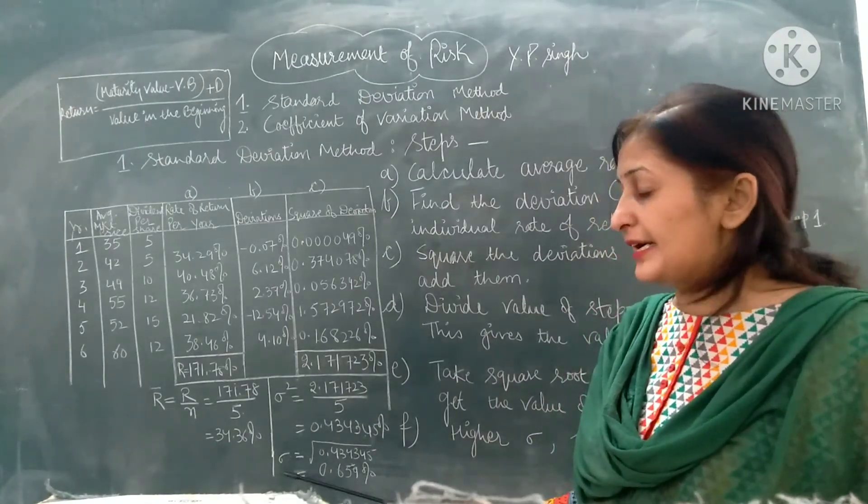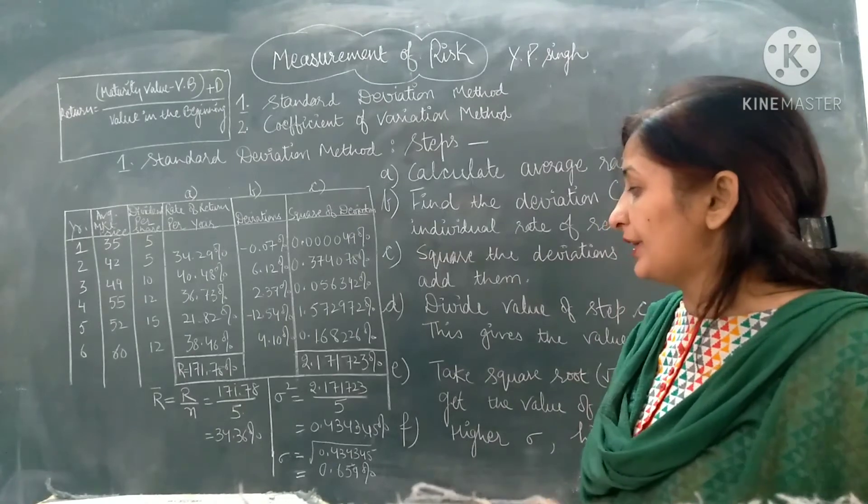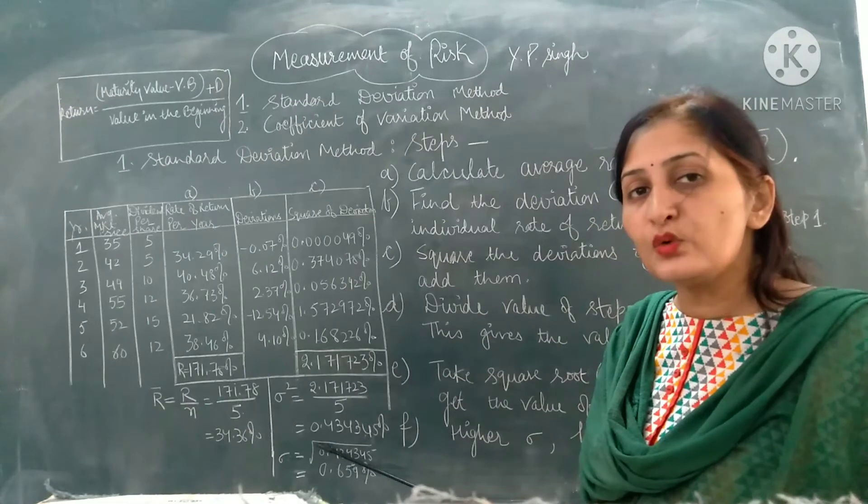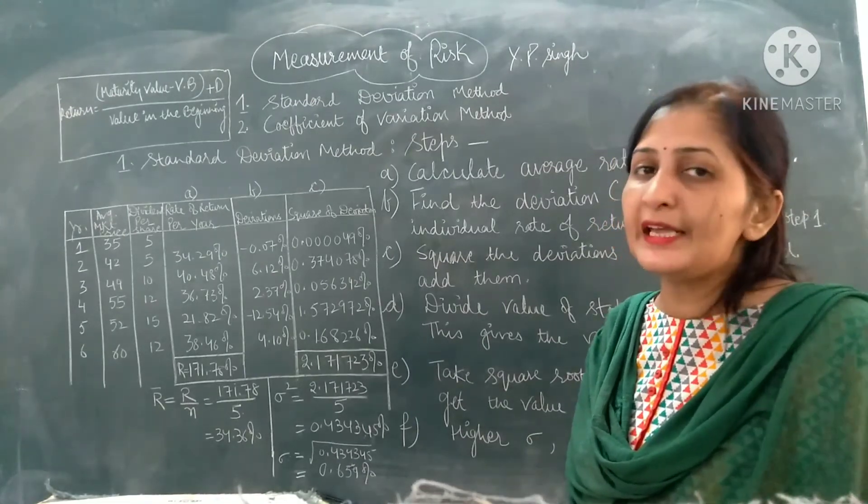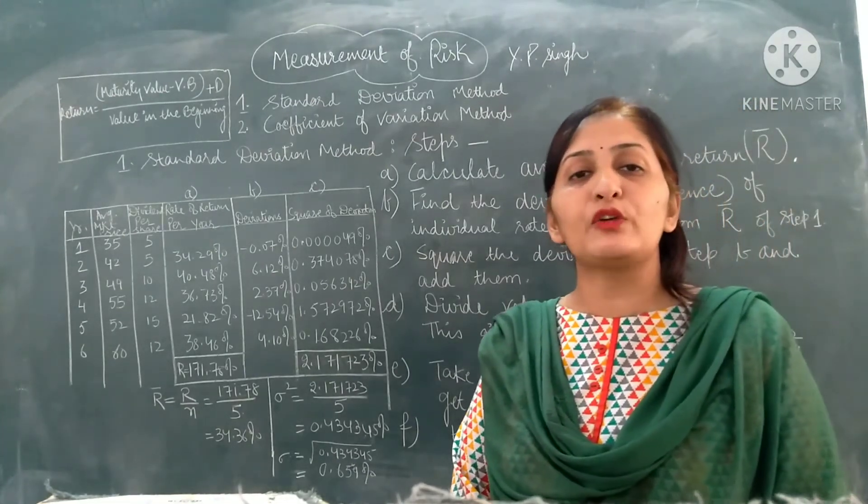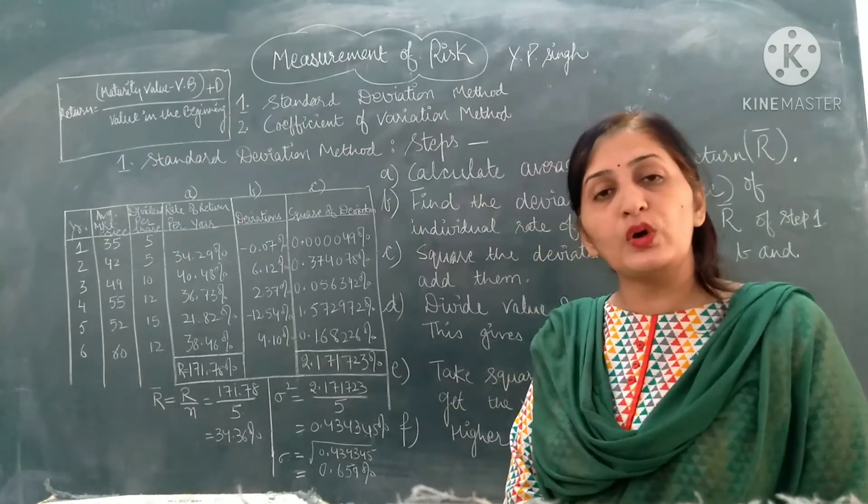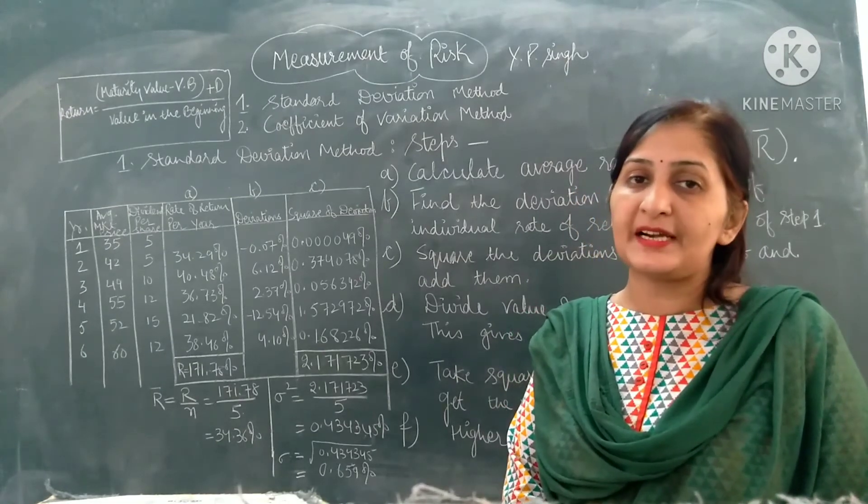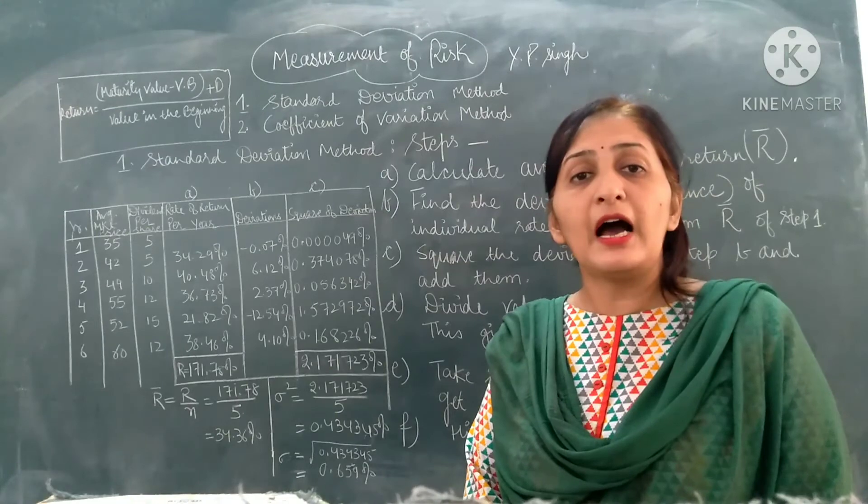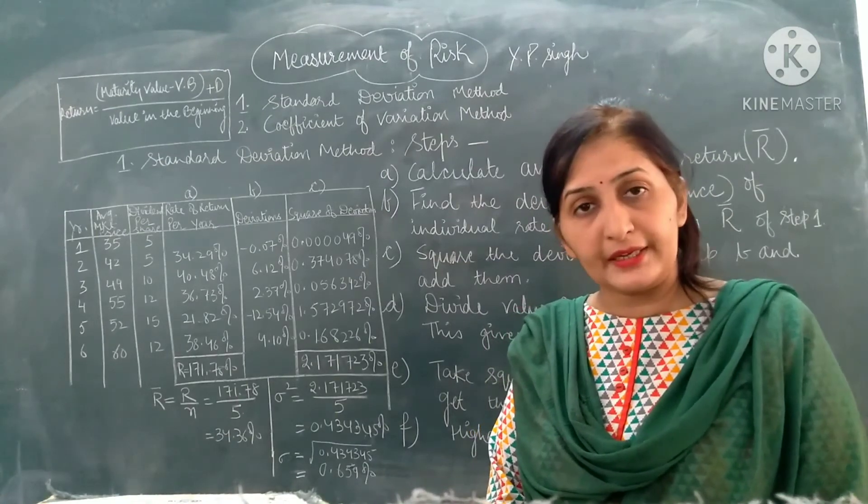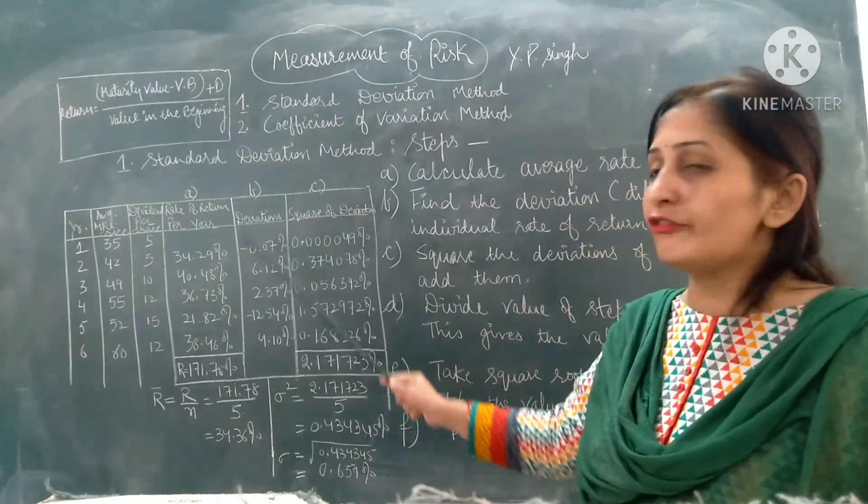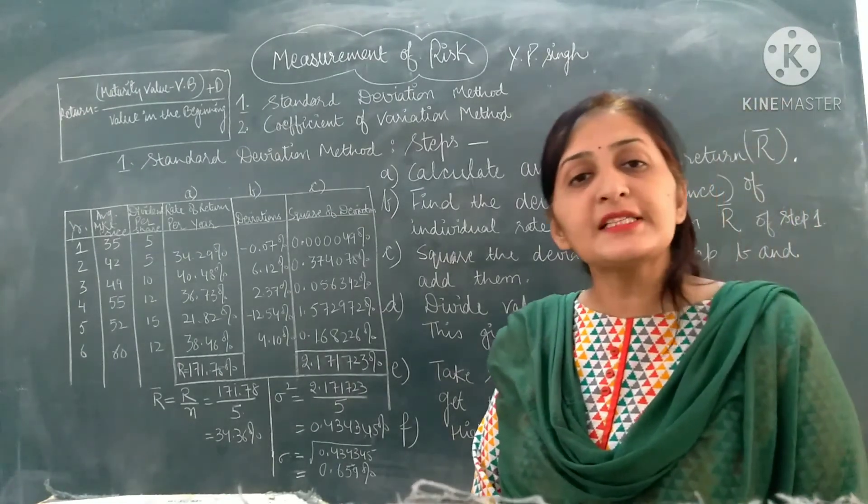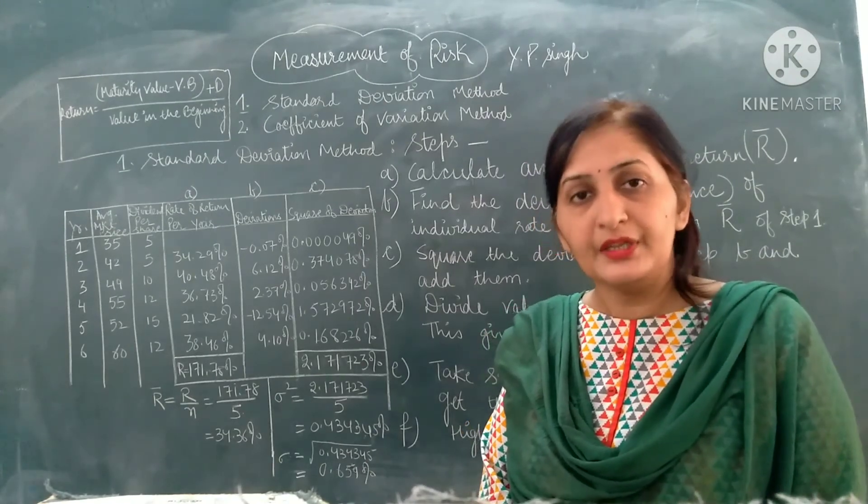The next step according to standard deviation method is to find out the square root of the variance. This gives us the standard deviation of a particular security. This is the way by which we can calculate the value of standard deviation to know the risk involved in a particular situation. Thank you.